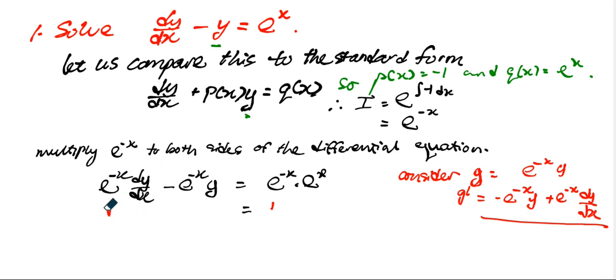So I can rewrite this as d, the derivative of g, which is e to the power of negative x y dx. So the left-hand side is changing to this, because these are the same, right? So the derivative is that.